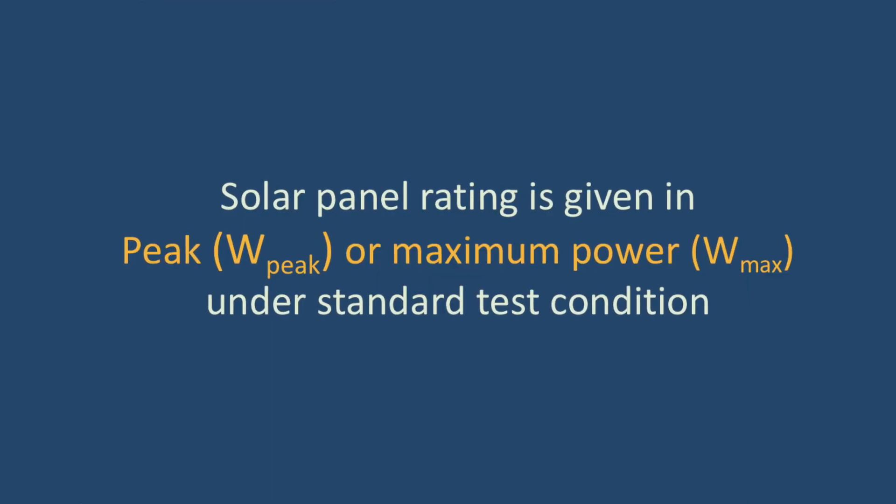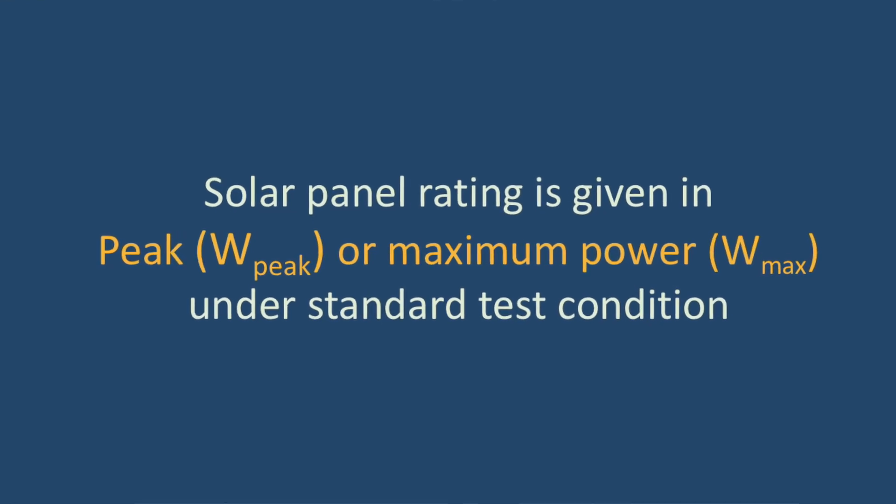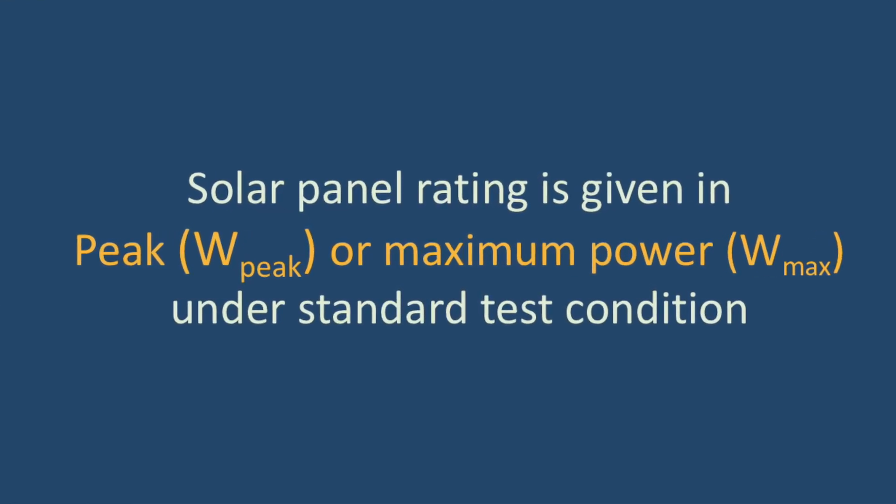This power rating is given under standard test conditions — similar to how vehicle mileage is specified under standard test conditions. The power rating mentioned for a panel is the maximum power you can get under standard test conditions. That is why the nameplate rating says not just 'watt' but 'watt peak,' 'watt maximum,' or 'Wm' — indicating the peak power you can get.